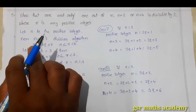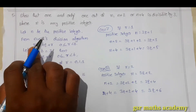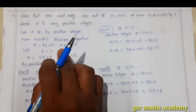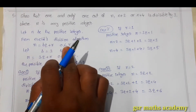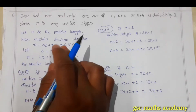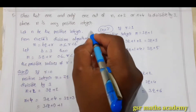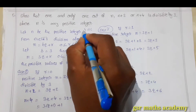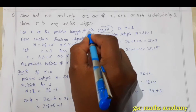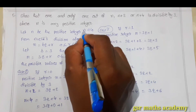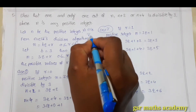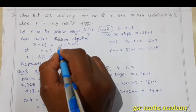From Euclid's division algorithm, I can write n is equal to b into q plus r, where 0 is less than or equal to r, less than b. This means on dividing n by b, you get a quotient q and remainder r. So dividend n is equal to divisor b into quotient q, plus remainder r.